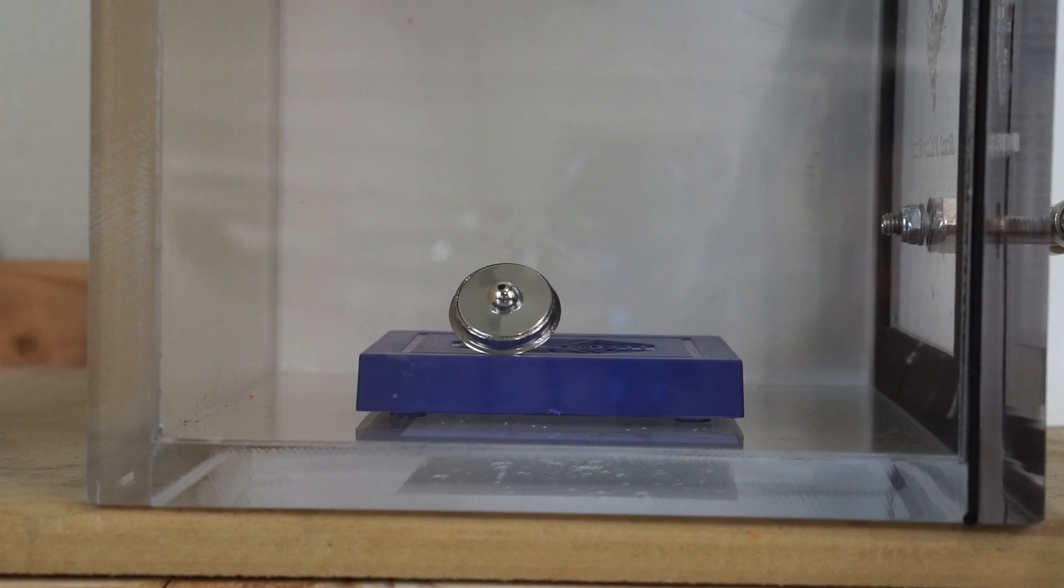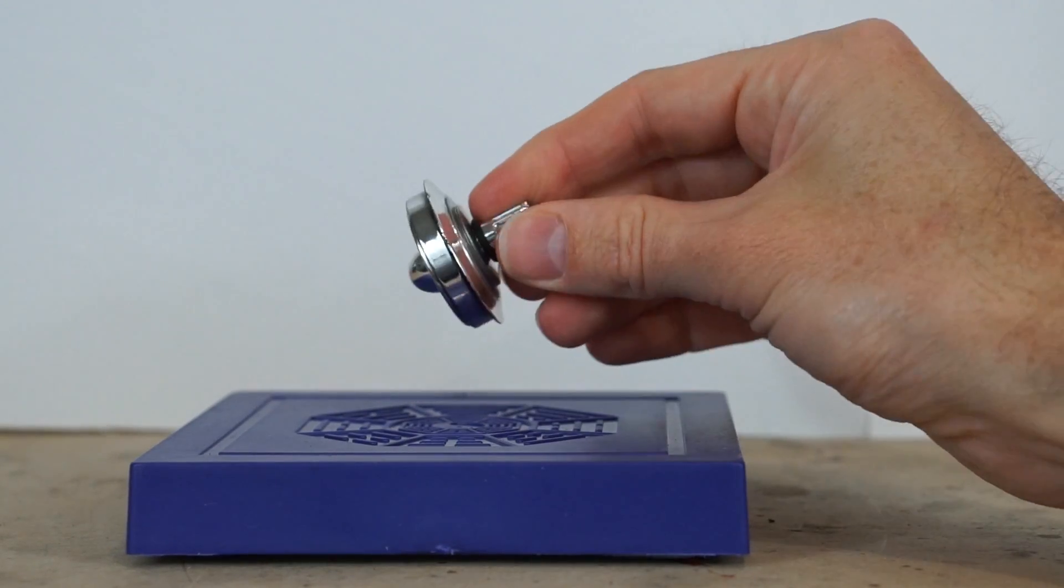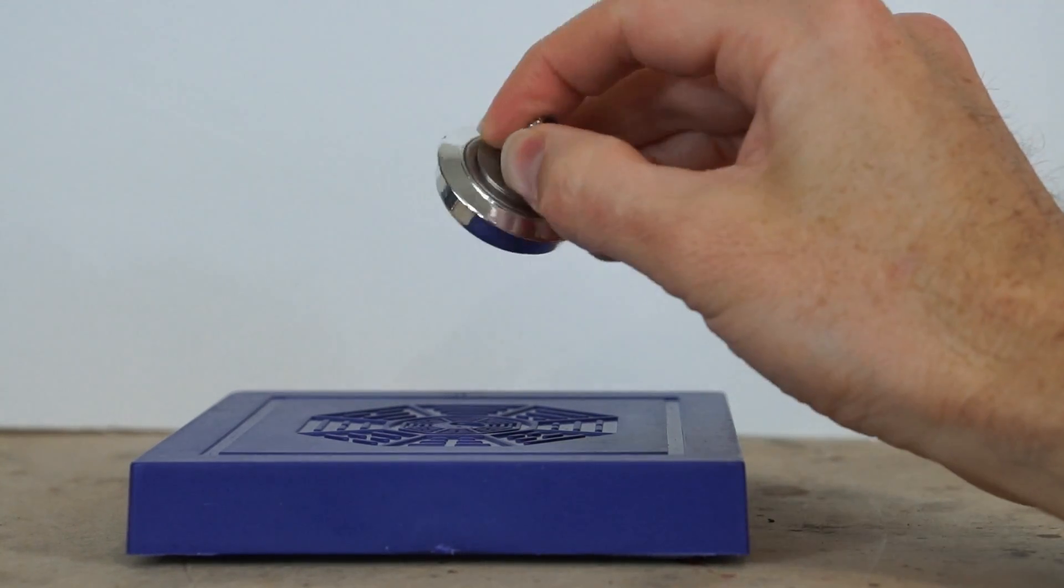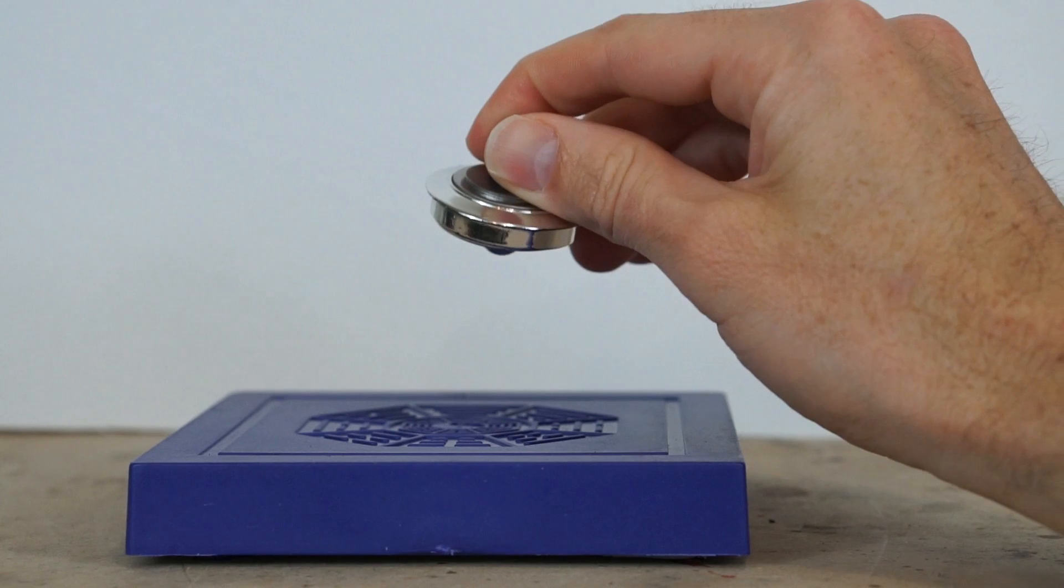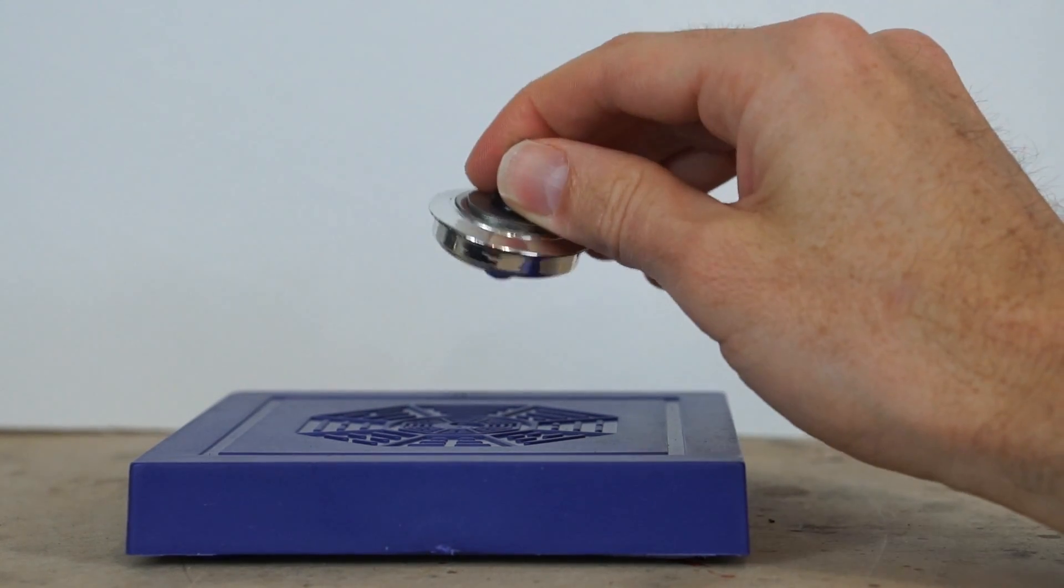Oh, and it finally fell. So we can see that in the vacuum chamber, this indeed does not spin forever. So why did this happen? Why doesn't it spin forever in the vacuum chamber if there's no air or virtually no air around it?